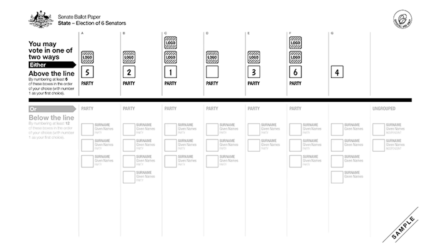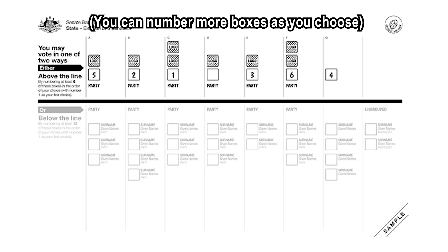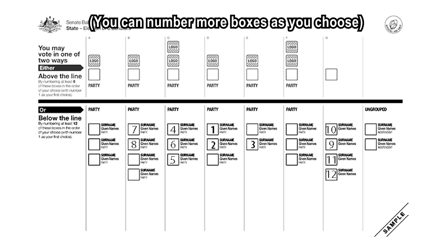The way you vote for Senate candidates is by either numbering at least six boxes above the line or at least 12 below the line, and then the AEC counts first preferences. Candidates who receive the quota or more are elected immediately.